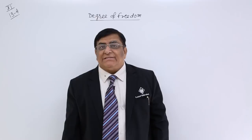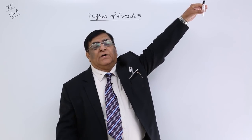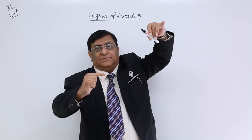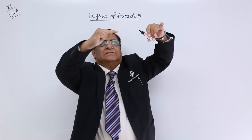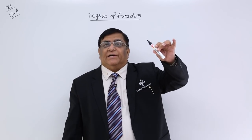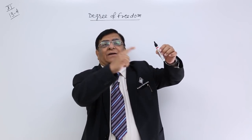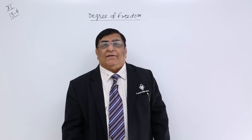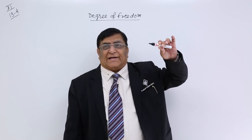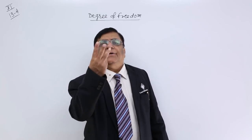If a molecule is here, how do I inform you? I inform you that this is the origin, it has got x coordinate so much, y coordinate so much, z coordinate so much. How many coordinates did I tell you? Three. So its degree of freedom is three - it has x, y, and z, three coordinates. It can do translatory motion in x direction, y direction, and z direction, so again degree of freedom is three.